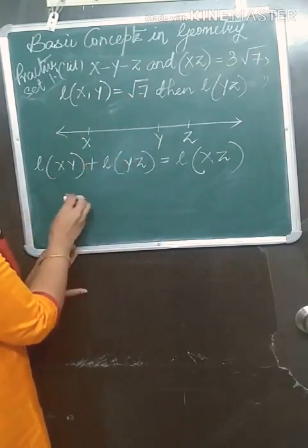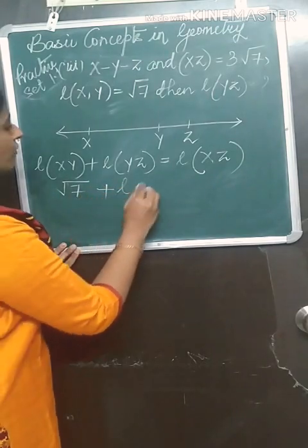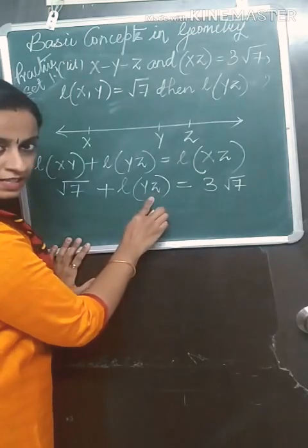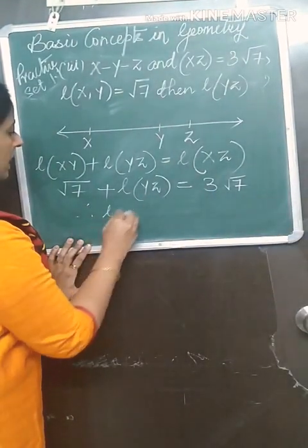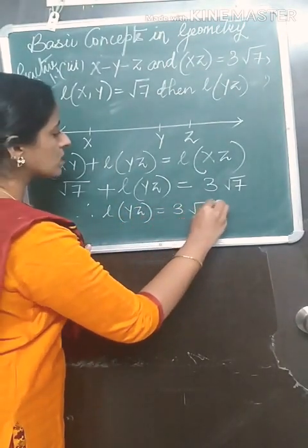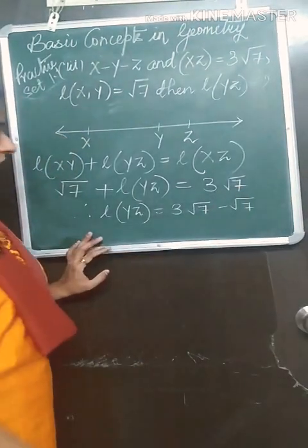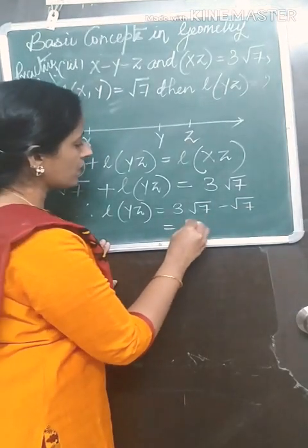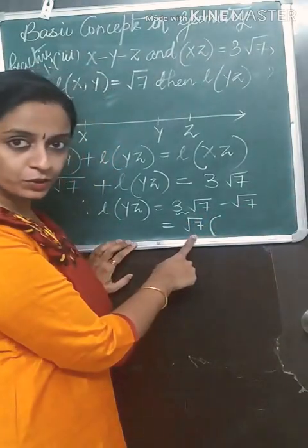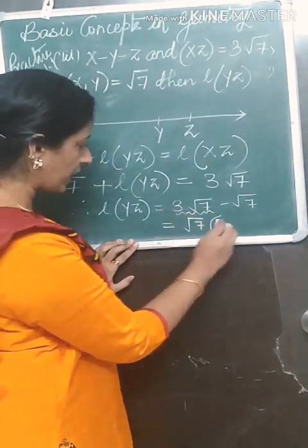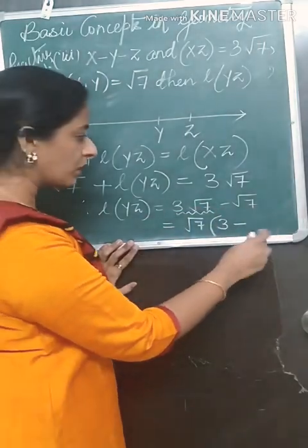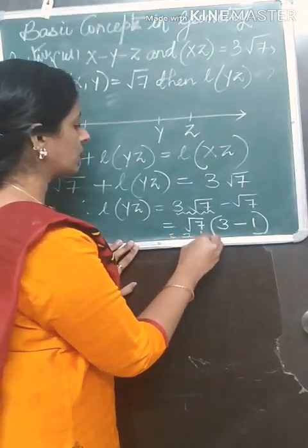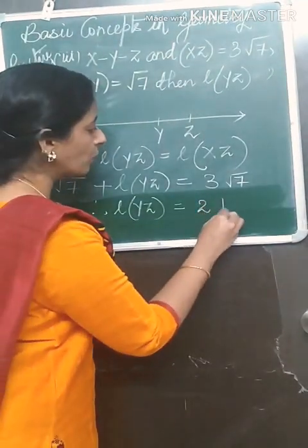XY is √7, plus length of YZ we have to find, is equal to length of XZ which is 3√7. So length of YZ equals 3√7 minus √7. Take √7 common: √7(3 minus 1) equals 2√7. So length of YZ is 2√7.